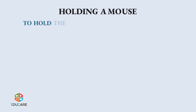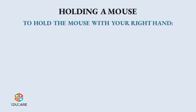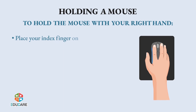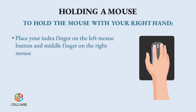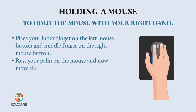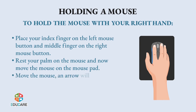Holding a mouse: To hold the mouse with your right hand, place your index finger on the left mouse button and your middle finger on the right mouse button. Rest your palm on the mouse and move the mouse on the mouse pad. An arrow will move on the screen.